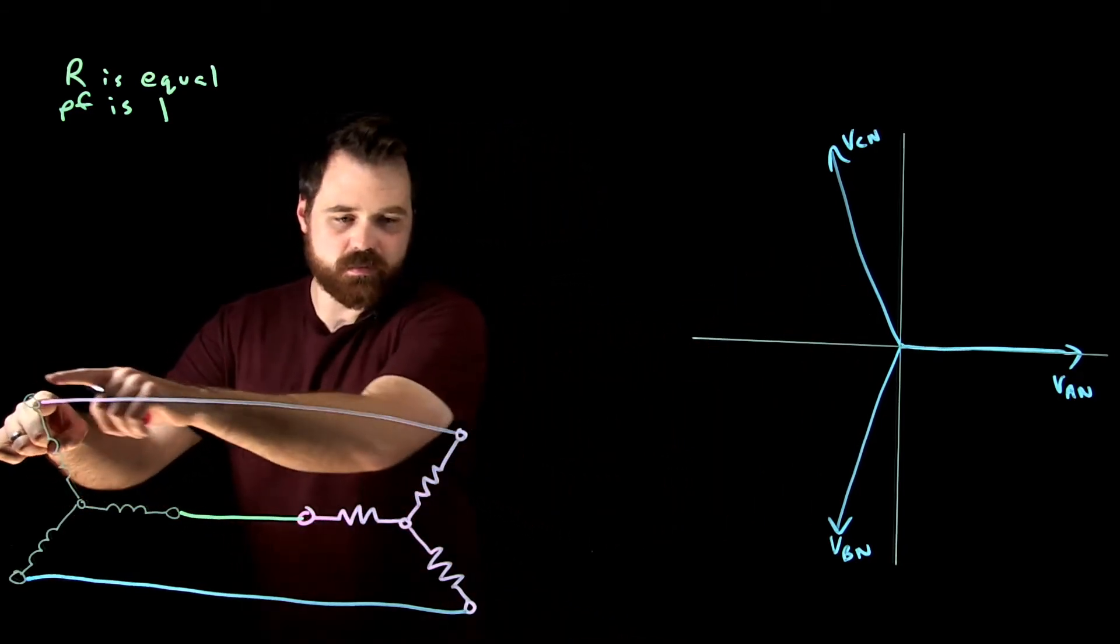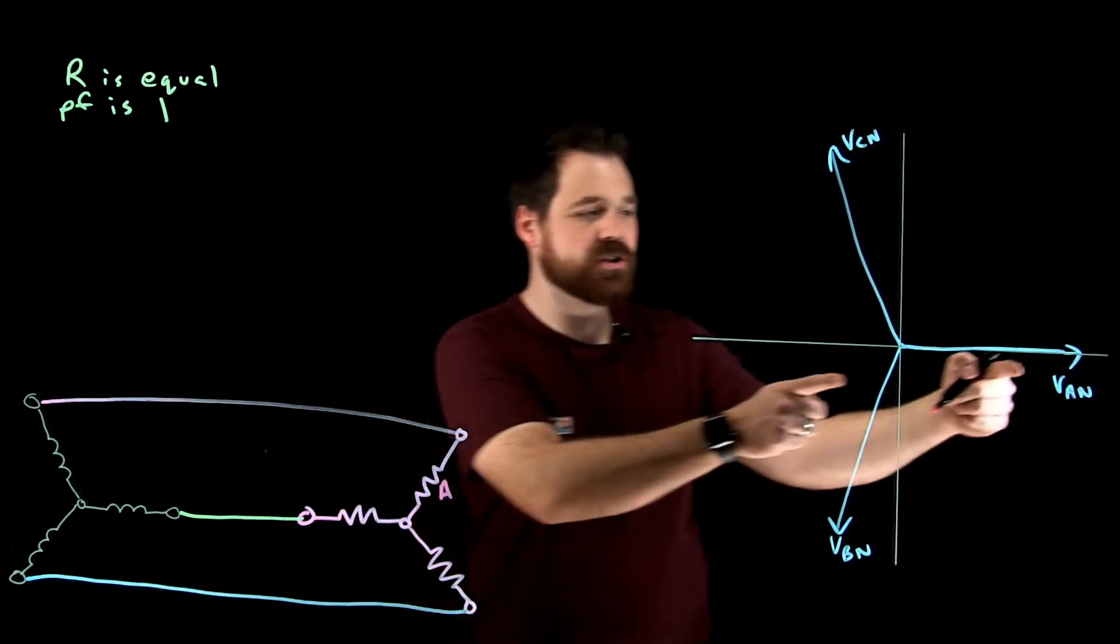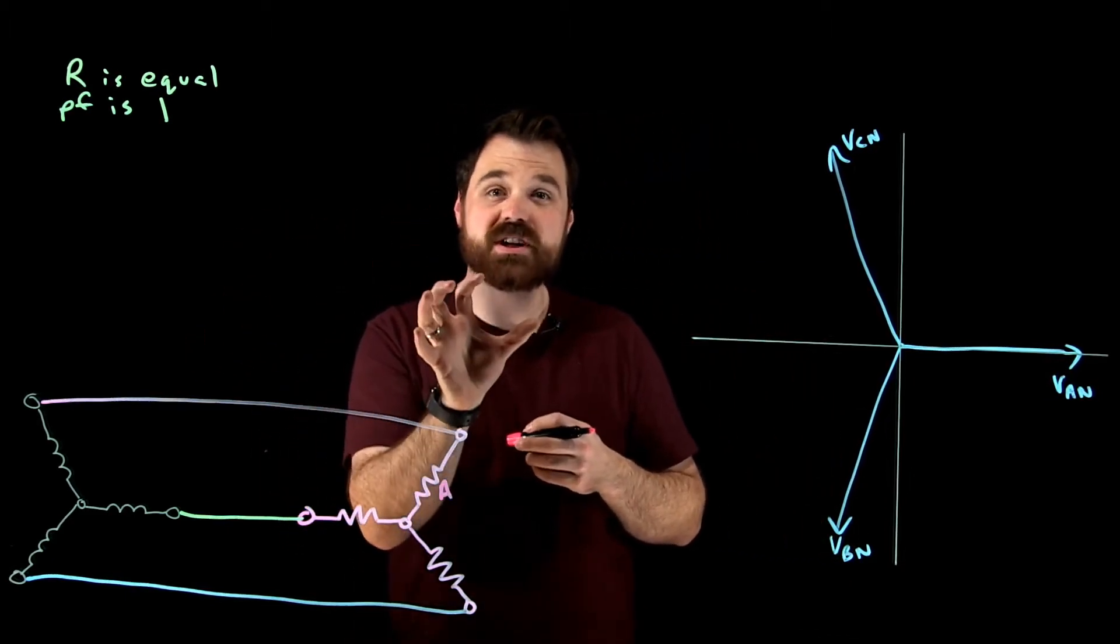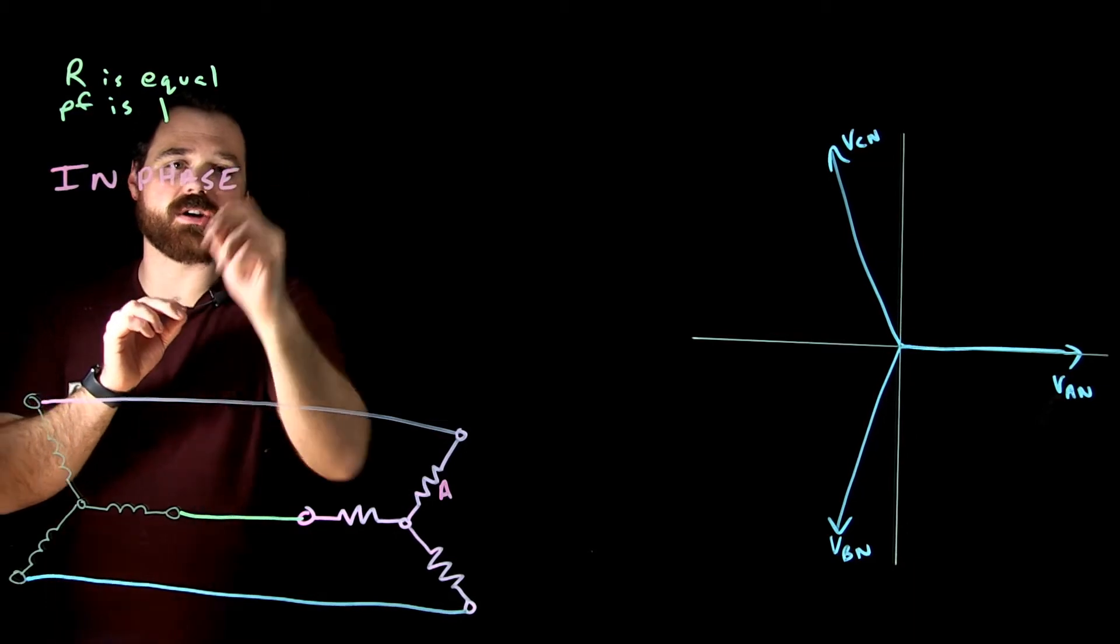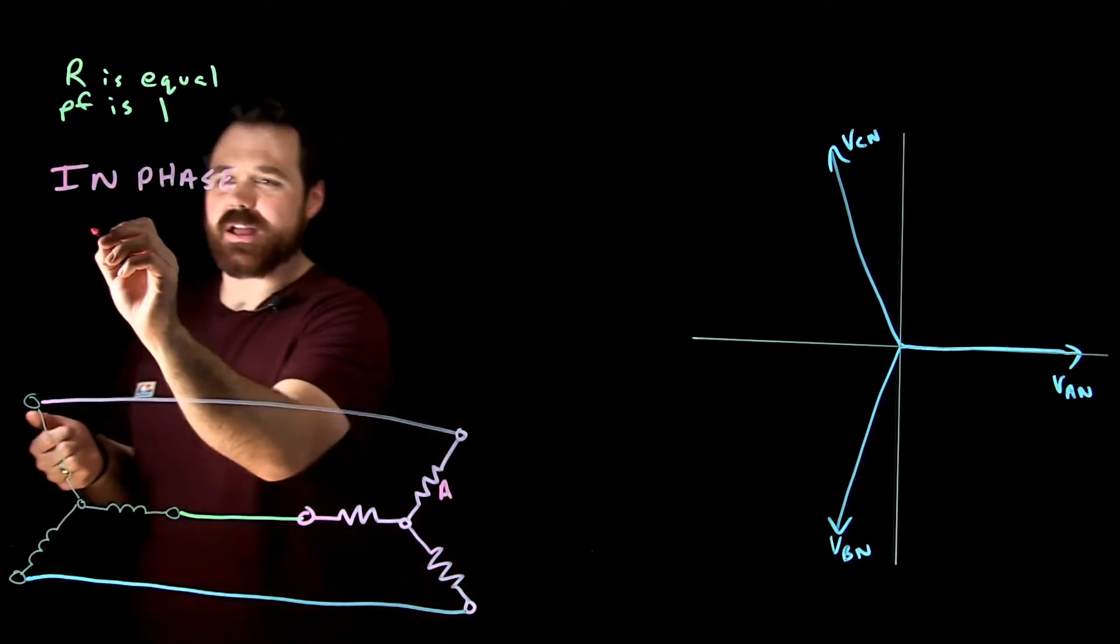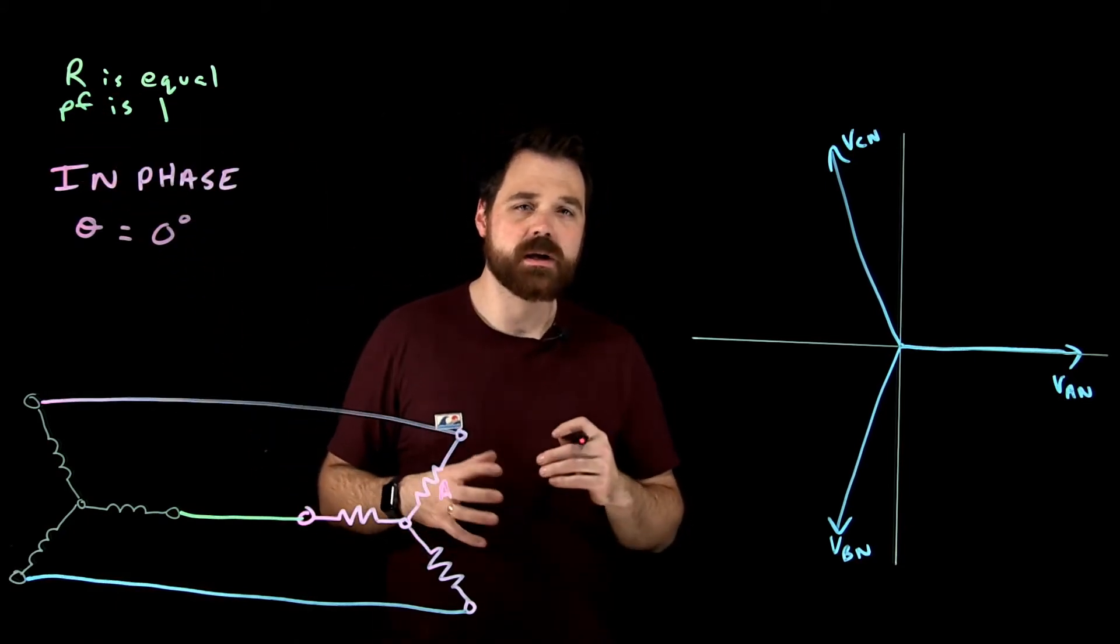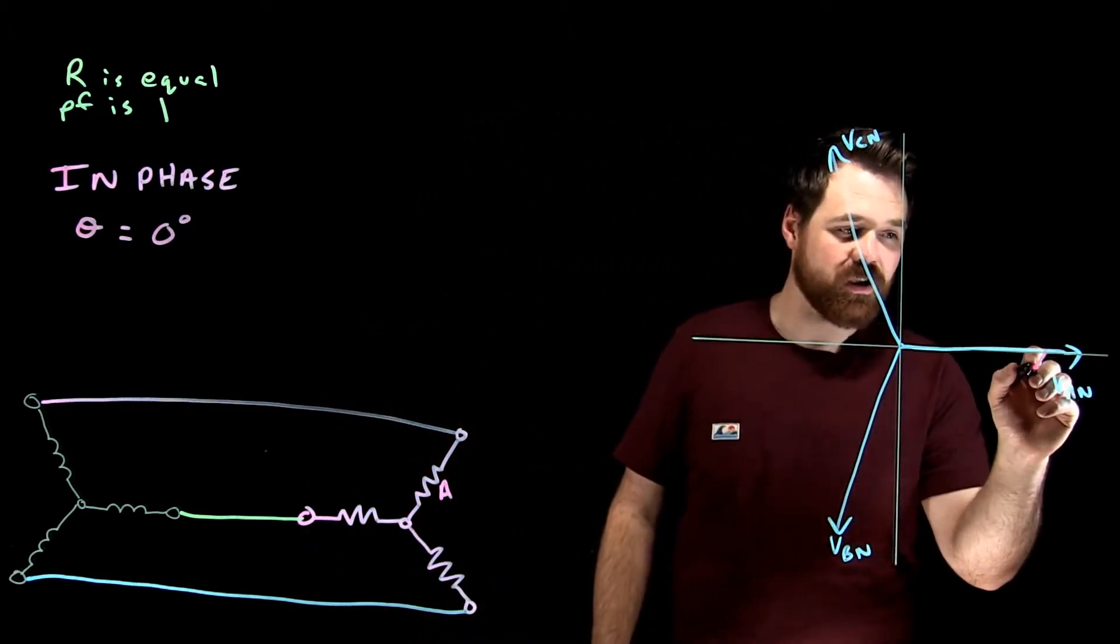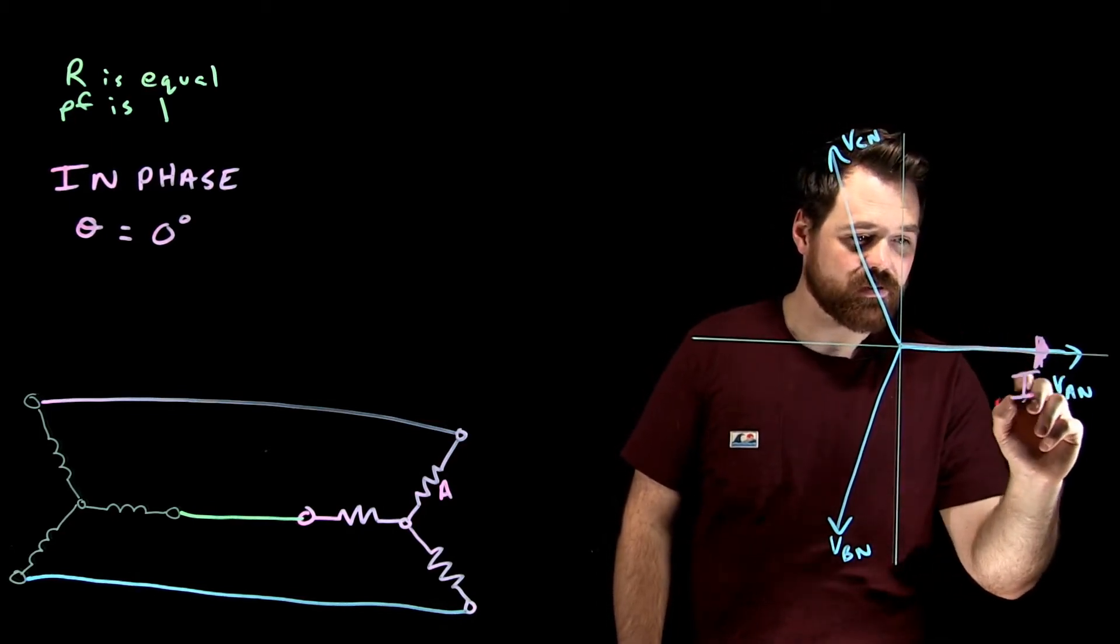So that's from A, this would be phase A here. So phase A to neutral, my voltage is here at zero. Now the relationship between voltage and current through a resistor is that they are what we call in phase with each other. Voltage and current are in phase with each other for a resistive load. Now, what that also means is that the phase angle is zero degrees, and we know our power factor is one. So when I'm looking at this resistive load in phase A, I know that the current is going to be here in phase with the voltage. So that's I A.